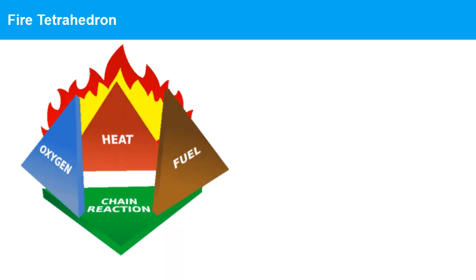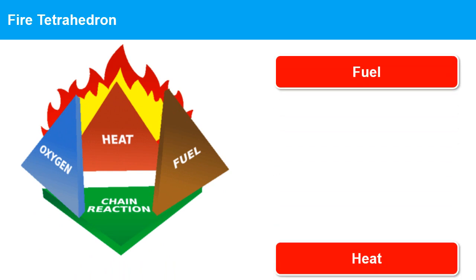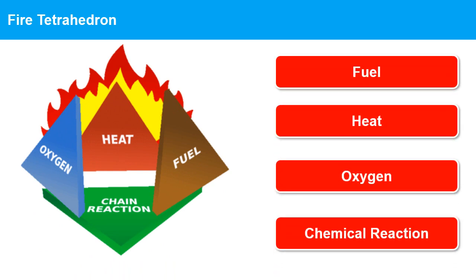The fire tetrahedron model expands on the fire triangle by adding a fourth element: chemical reaction. The chemical reaction refers to the process that occurs when the fuel and oxygen combine to release energy in the form of heat and light. This chemical reaction sustains the fire and allows it to continue burning.